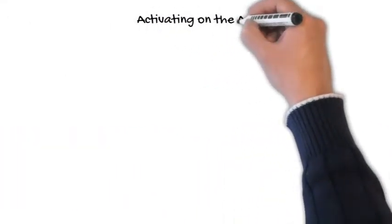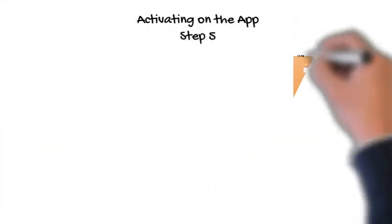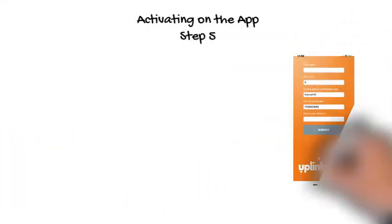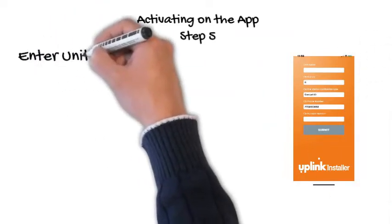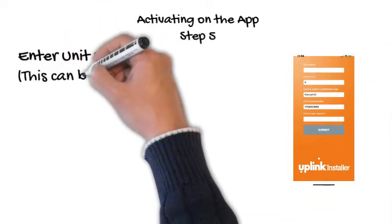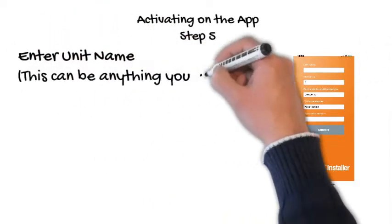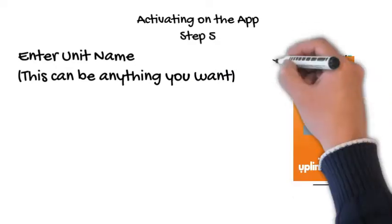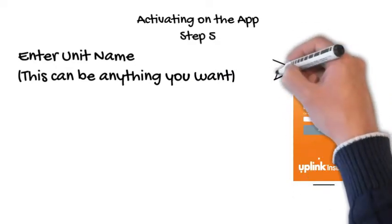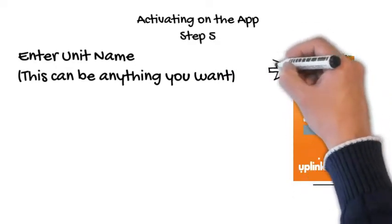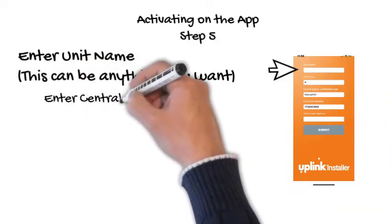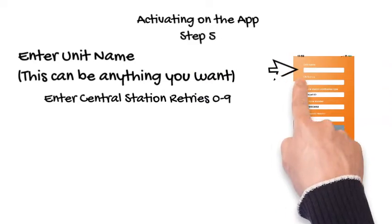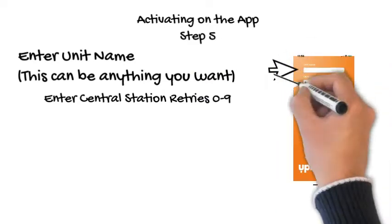Step 5 is to edit unit settings. Name the unit — this is for your future reference and can be anything you want, up to 30 characters. Next, enter the central station retries. This is how many times our data center will attempt to redial your central station if we fail to get a successful confirmation.